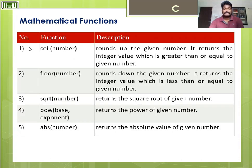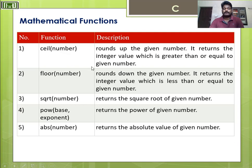Now moving to important mathematical functions in C. First, we have ceil — ceil rounds up the given number and returns the integer value which is greater than or equal to the given number. Then floor rounds down the given number and returns the integer value which is less than or equal to the given number. This is just the opposite of ceil.